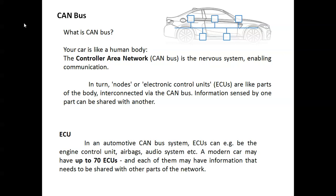CAN bus is a Controller Area Network bus — it is like a nervous system enabling communication. CAN bus has electronic control nodes called ECUs. Similarly to how our body has a nervous system for communication, a car uses CAN bus. A modern car may have up to 70 Electronic Control Units.